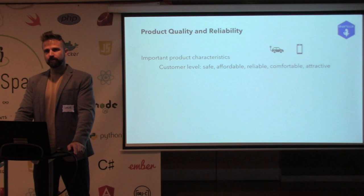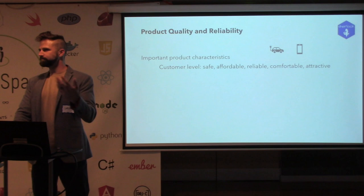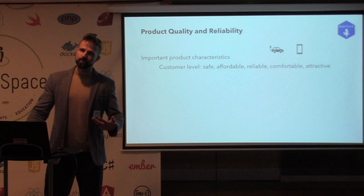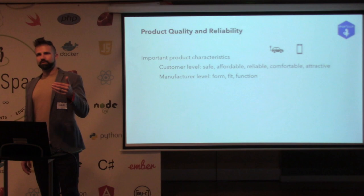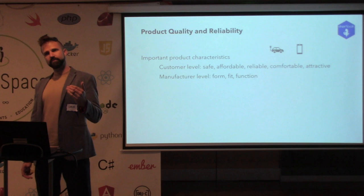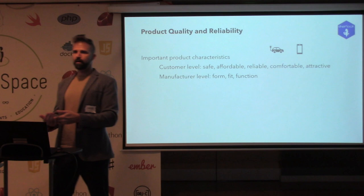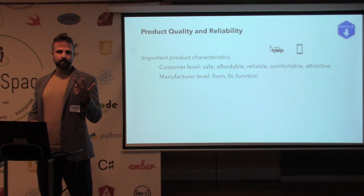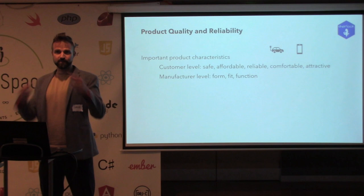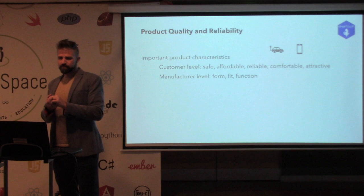At the customer level we want products to be safe, affordable, reliable, and comfortable. But from the manufacturer's perspective, those higher-level expectations translate to lower-level specifications. For physical products it often comes down to form, fit, or function — the three F's. Form is geometry; you wouldn't buy a phone shaped like a triangle. These translate to manufacturing or design specifications, which each manufacturer factors into their design.